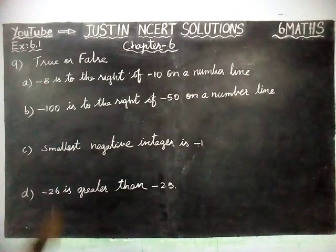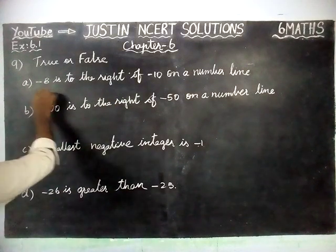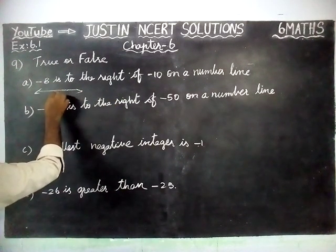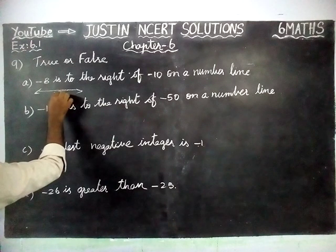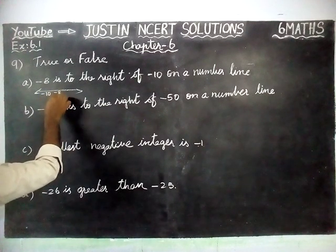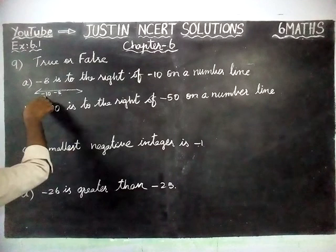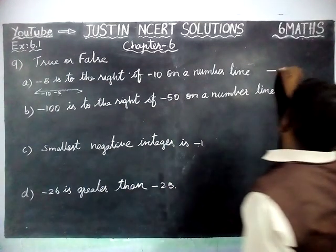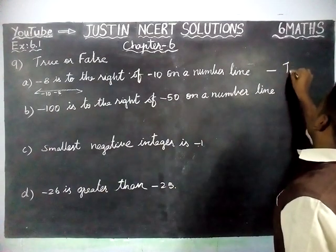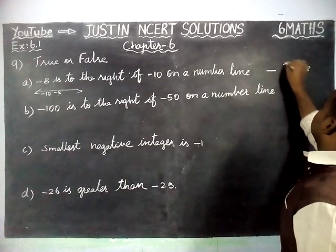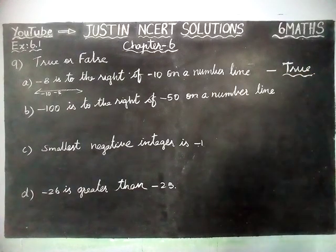When we draw on the number line, minus 8 will come here and minus 10 will come further left. So minus 8 is to the right of minus 10 — that is a correct statement. So this is true.